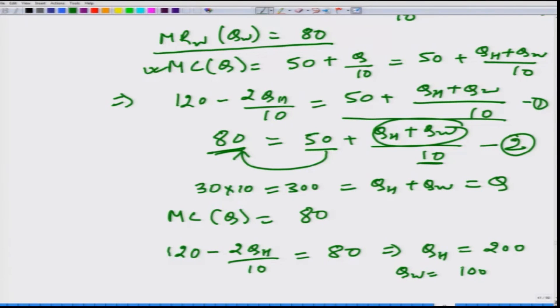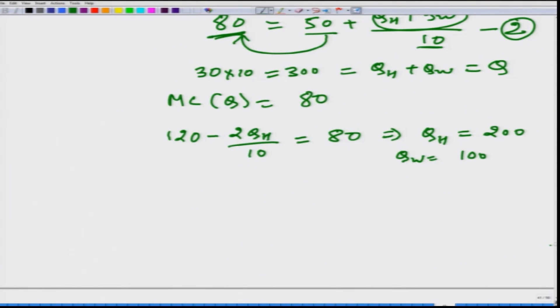Now, we can calculate the PW we already know it is 80. How much is the PH? We can plug the value of QH in the demand function. The demand function is 120 minus QH by 10. Here QH is 200, so by 10 this comes out to be 100.